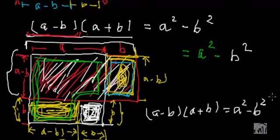So we have learned how this identity can be represented in two ways. Seen from left to right we solve it one way, and from right to left it can be represented another way. Both methods are very interesting and I think you must have liked it.